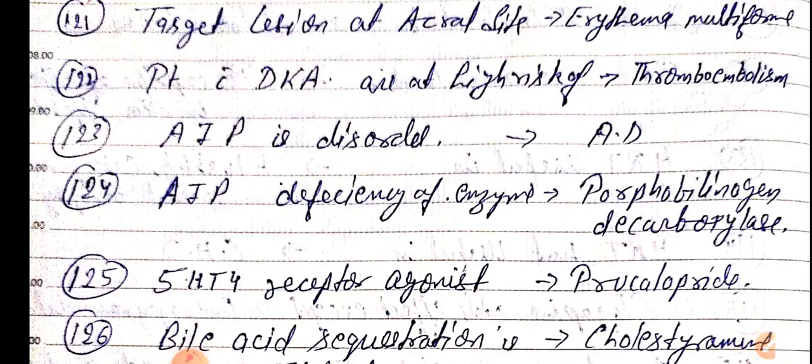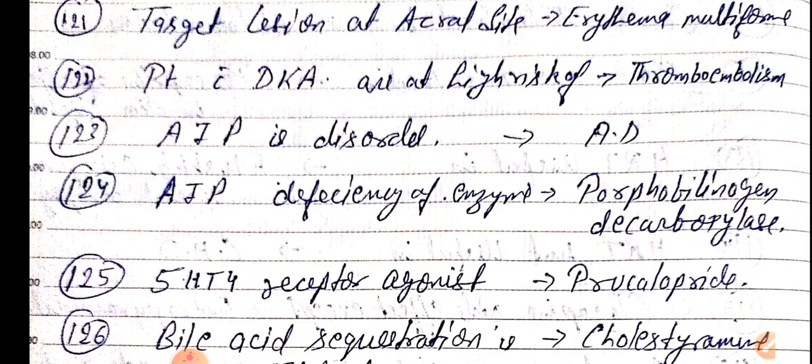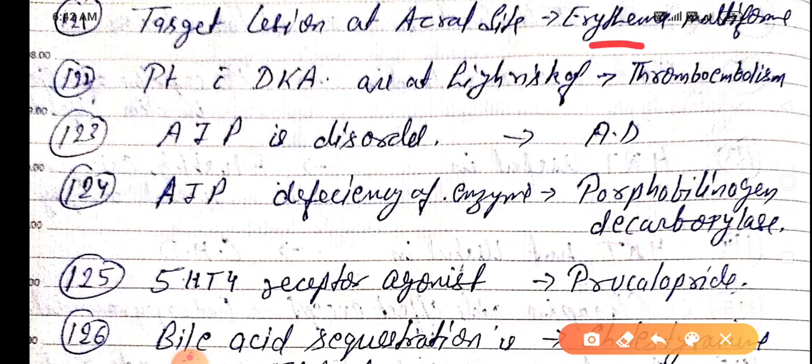Good morning doctors, welcome again. Today we are going to discuss NEET PG 2021 important one-liners — this is Part 13. Target lesion of acral site is seen in erythema multiforme.